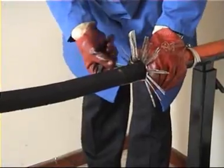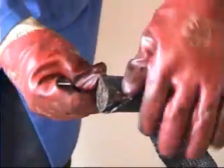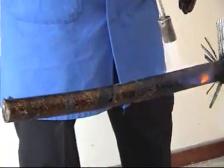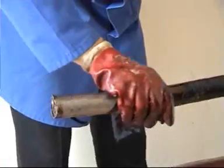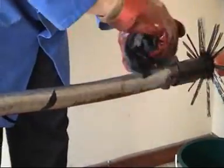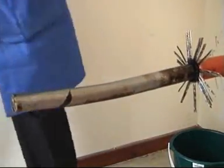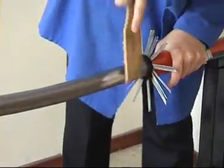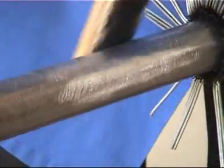In order to expose the lead sheath we now need to remove the bitumastic layers from the cable. Using a gas torch to heat the cable will make this much easier. Use a wire brush to further clean the lead sheath. This will make a good earth connection point.